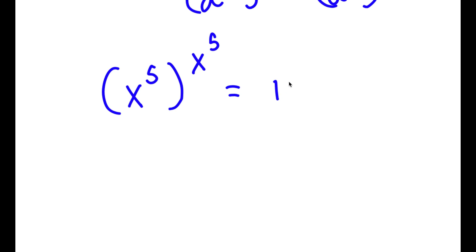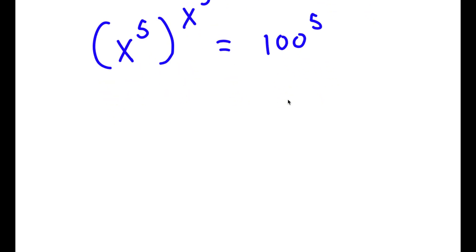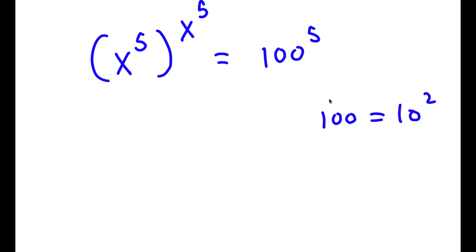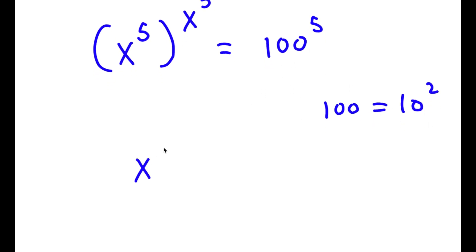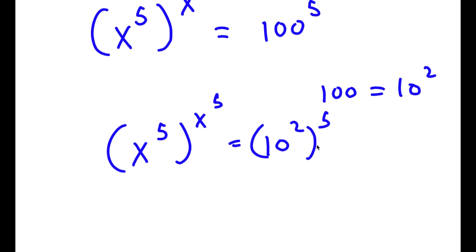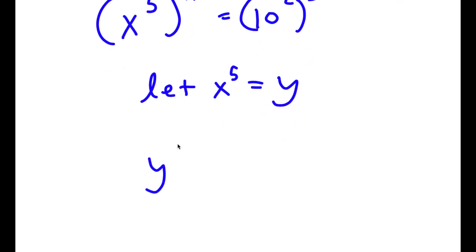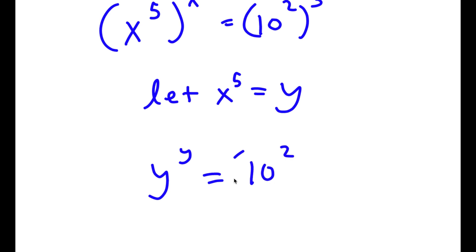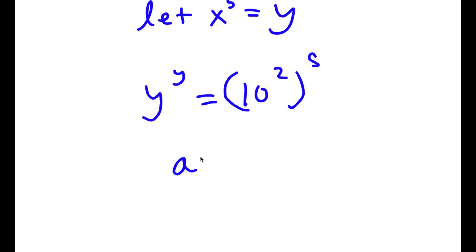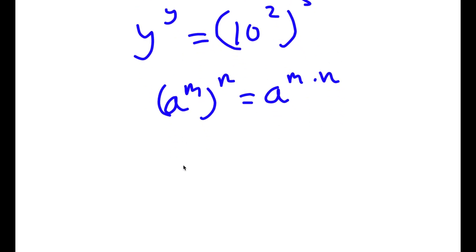This is equal to 100 to the power of 5. Now 100 is the same thing as 10 squared. So replacing 100 with 10 squared, I get x to the power of 5 to the power of x to the power of 5 is equal to 10 squared to the power of 5. Now I'm going to let x to the power of 5 equal the variable y, so I get y to the power of y is equal to 10 to the power of 2 to the power of 5. Using the exponent rule, 10 to the power of 2 to the power of 5 equals 10 to the power of 10, because 2 times 5 is 10.